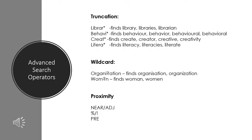A wildcard is essentially a similar tool to truncation but for a letter missing in the middle of a word. A question mark can stand for either an 's' or a 'z' in 'organi?ation' to cover a variety of spellings, or we could use it in 'wom?n' to search for both woman and women in one search. Proximity is a search operator used to associate two terms that need to be near each other but don't have to be side by side or in an exact phrase.